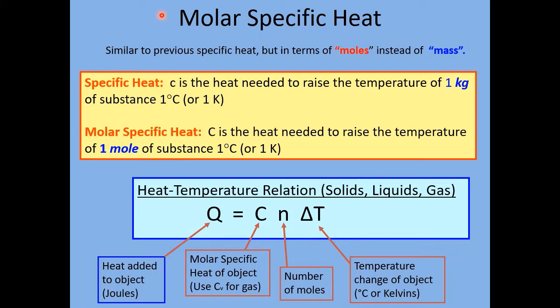There's something closely related to specific heat: molar specific heat. It's similar to regular specific heat but we work in terms of moles instead of mass in kilograms. The specific heat (lowercase c) is the heat needed to raise the temperature of one kilogram of a substance by one degree Celsius. The molar specific heat (uppercase C), on the other hand, is the heat needed to raise the temperature of one mole of a substance by one degree Celsius.